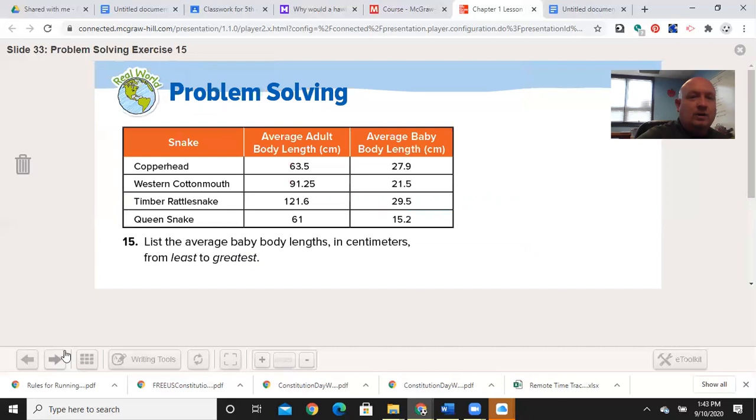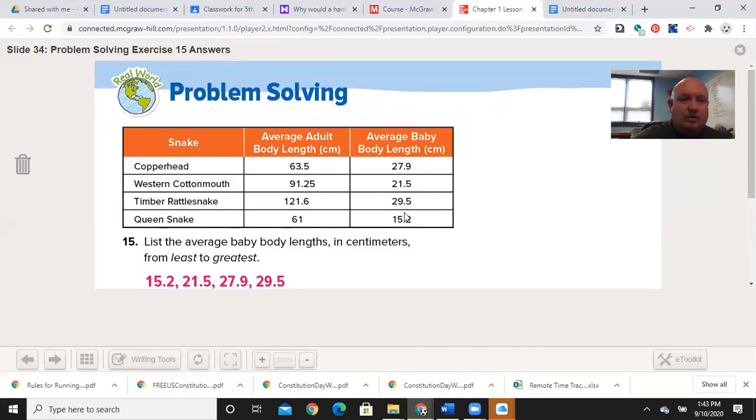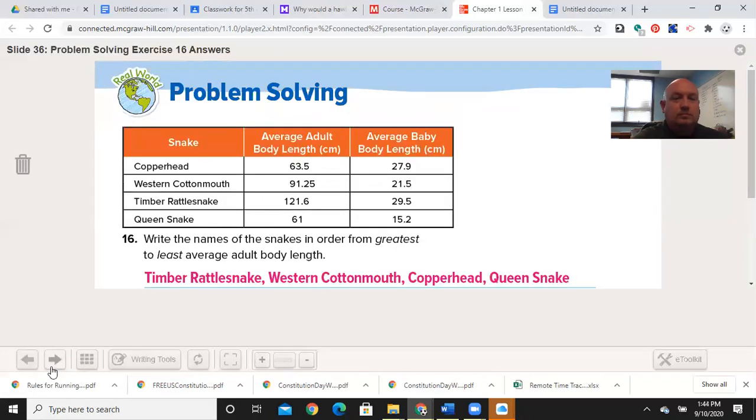Let's look at another one. Problem solving: list the average baby body lengths in centimeters from least to greatest. So I want the length of baby body, which is this column here, and I want it in centimeters. So I don't need to write the word copperhead or western cottonmouth, I just need the numbers. So let's go from least to greatest. Go ahead and pause the video now. Welcome back and see how you did: 15.2 up to 21.5, 27 to 29.